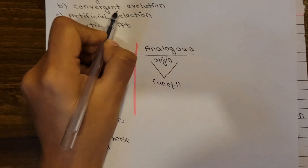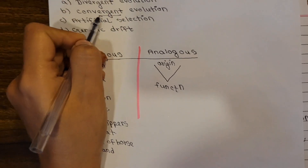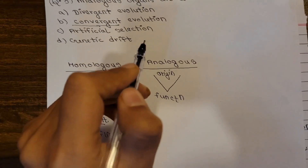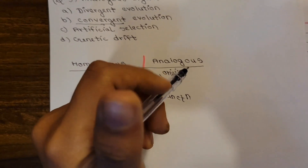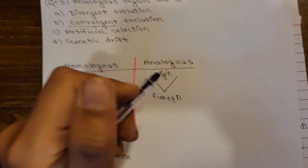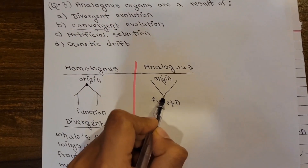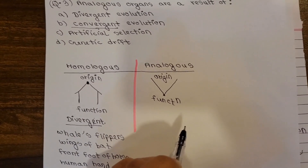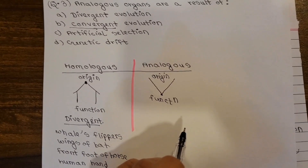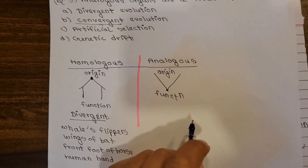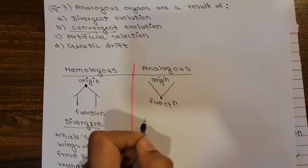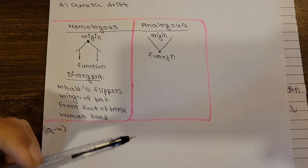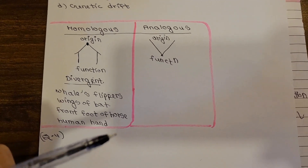For analogous organs, we have a different origin but the same function. An example is the wings of birds and bats — different origin, but same function of flying. Similarly, the flippers of fish and the scorpion's limbs can be used as examples. Analogous organs result from convergent evolution. We also need to learn about vestigial organs and connecting links — these are very important.